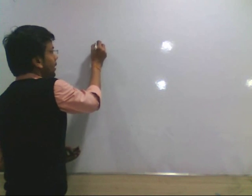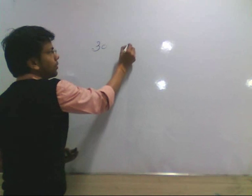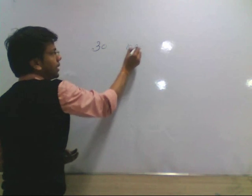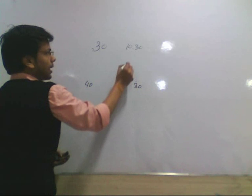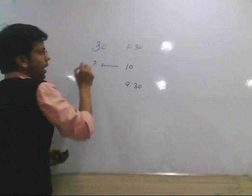So I am writing the question: if our speed is 30, we are reaching at 10:30. If our speed is 40, we are reaching at 9:30. At 10, what would be our speed?